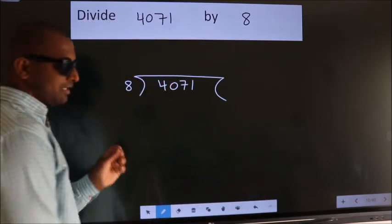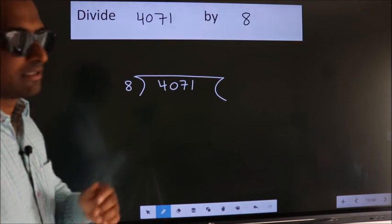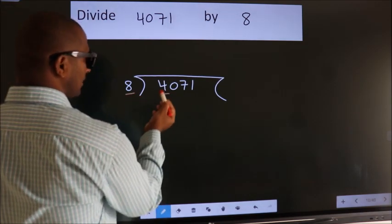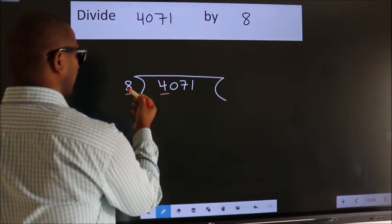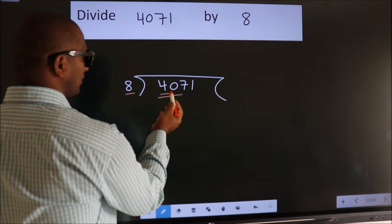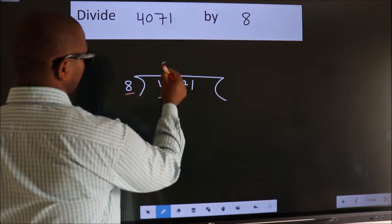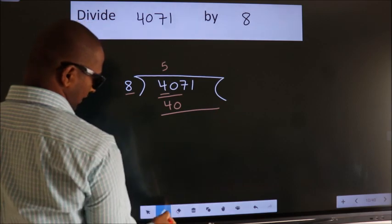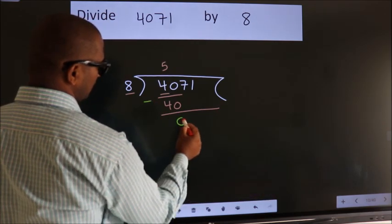This is your step 1. Next, here we have 4, here 8. 4 is smaller than 8, so we should take 2 numbers: 40. When do we get 40 in 8 table? 8 fives, 40. Now we should subtract. We get 0.